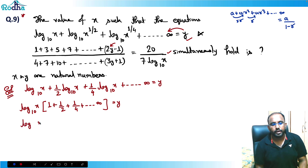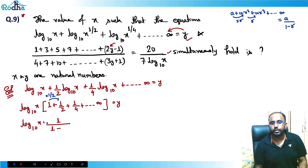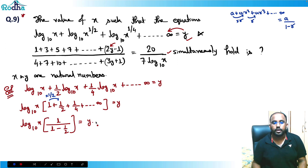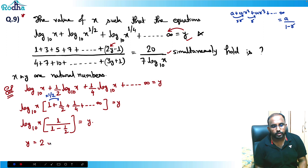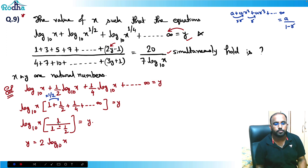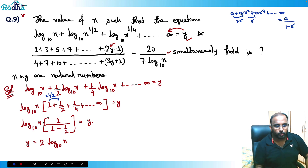Applying the infinite GP formula: log x base 10 × (1 / (1 - 1/2)) = y. Since the first term is 1 and r = 1/2, this gives log x base 10 × 2 = y. So y = 2·log x base 10, which means log x base 10 = y/2.